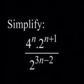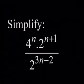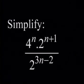We've covered a lot of work today. Let's see if we can complete the task using all the laws you've learned so far. Simplify: 4 to the power n, multiplied by 2 to the power n plus 1, all divided by 2 to the power 3m minus 2. I hope you've enjoyed the lesson. See you next time. Bye-bye.